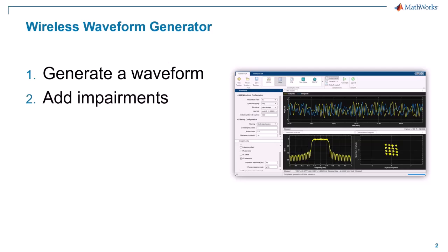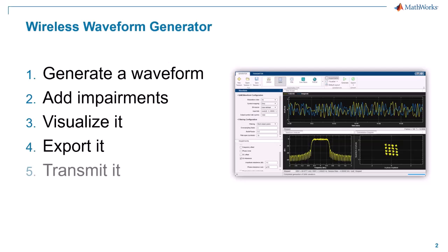Then we can add impairments if we want, such as noise, frequency offset, IQ imbalance, and some other effects. Then we can visualize our waveform constellation diagram, spectrum, or the resource grid if we are talking about OFDM-based waveforms. Then we can export it into the MATLAB workspace. And finally we can transmit it if we have some sort of device like an SDR or any other hardware equipment. Now let's jump into MATLAB to see how we can build a waveform using this app.